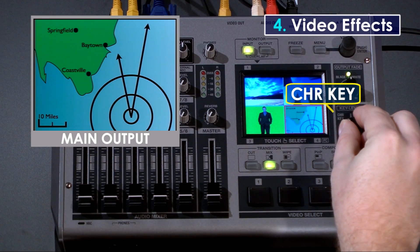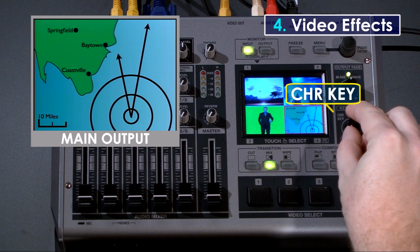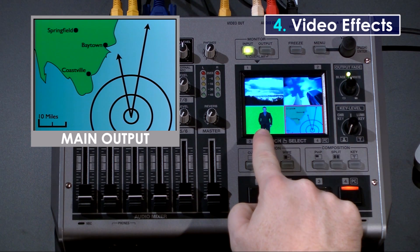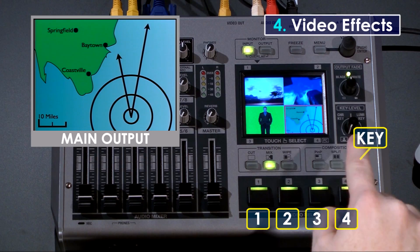The ChromaKey function uses a color such as blue or green. Here we have a person in front of a green screen and it's easy to place that person in front of a computer graphic.